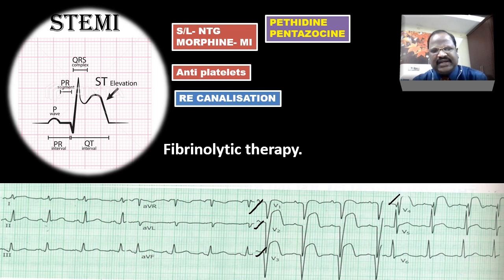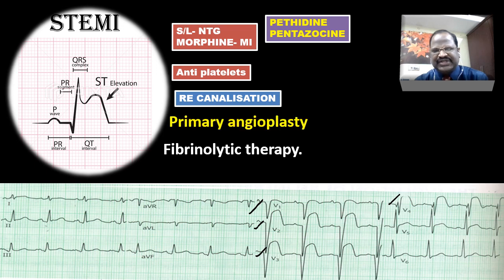If facilities are available and the patient can afford it, the best option for recanalization compared to fibrinolytic agents is surgical intervention by percutaneous transluminal coronary angioplasty (PTCA) or elective CABG — the best being angioplasty. After this, we start anticoagulants, antiplatelets, and control diabetes and cholesterol. These are adjuvant therapies for acute MI.